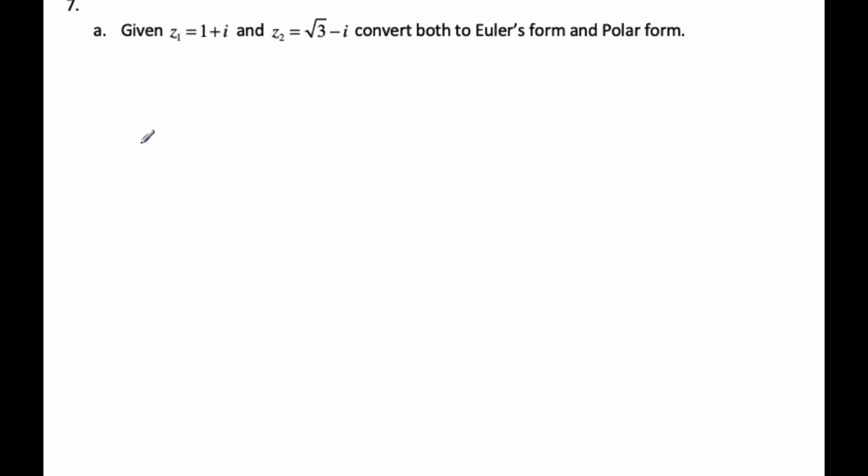If I'm going to do Euler's form, I know that my r value is going to be 1 squared plus 1 squared, so I get the square root of 2. This is r1. If I go tangent theta1 is equal to 1 over 1, they're both positive,